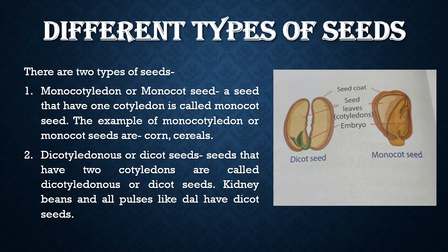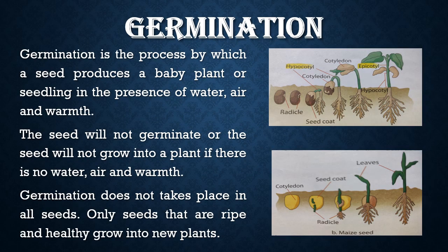Now comes germination. Germination is the process by which a seed produces a baby plant or seedling in the presence of water, air, and warmth. The seed will not germinate or grow into a plant if there is no water, air, and warmth.